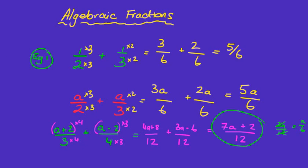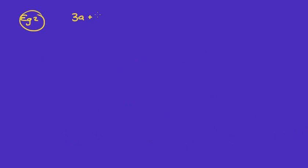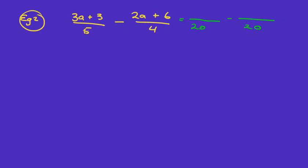Now let's look at subtraction — a slightly more challenging example. We'll do (3a + 3) over five minus (2a + 6) over four. This is a subtraction question, so we need a common denominator of twenty. We times five by four, so we times the top by four as well. Likewise, we times four by five, so we times that top by five too. Three a times four is twelve a, and three times four is twelve.